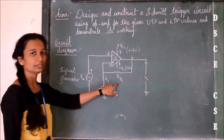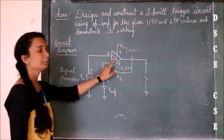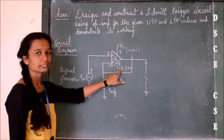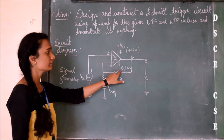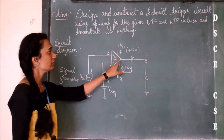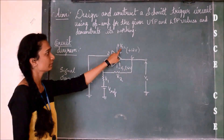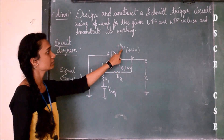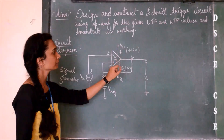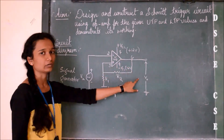A resistor R2 is connected across pin number 3 and pin number 6. Pin number 4 is connected to minus VCC where minus VCC is minus 12 volts. Pin number 7 is connected to plus VCC where plus VCC is plus 12 volts. Pin number 6 is connected to the output.